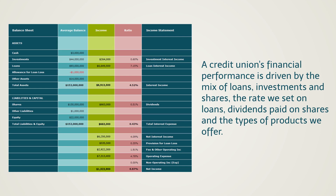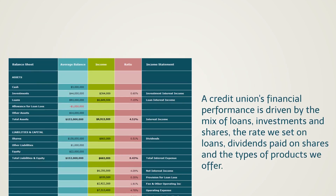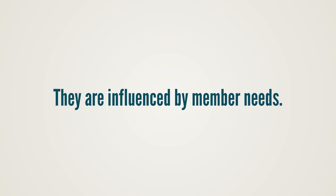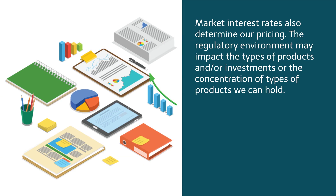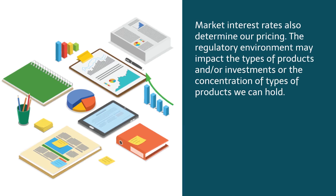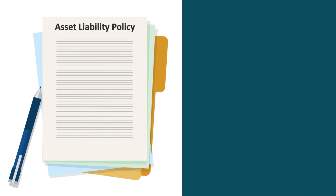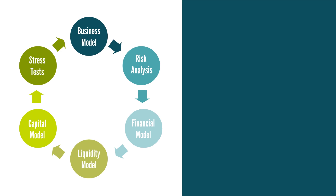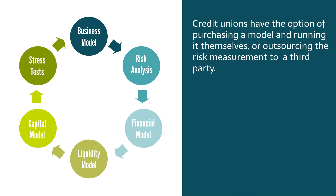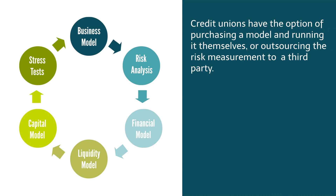These are the asset liability decisions that your management team makes. These decisions are not made in a vacuum — they are influenced by member needs. We need to offer the types of loans and shares that our members need and want. How we price our products is influenced by competitor rates. Market interest rates also determine our pricing. The regulatory environment may impact the types of products, investments, or the concentration of types of products we can hold. The formalized process for asset liability management begins with an asset liability policy. The policy provides a framework of the objectives of the credit union, assigns responsibility, defines actions to measure and manage risk, and delineates the credit union's risk tolerance guidelines. In order for the credit union to manage risk, it must know how much risk it has. This is accomplished with asset liability models, which measure interest rate and liquidity risk. Credit unions have the option of purchasing a model and running it themselves or outsourcing the risk measurement to a third party.